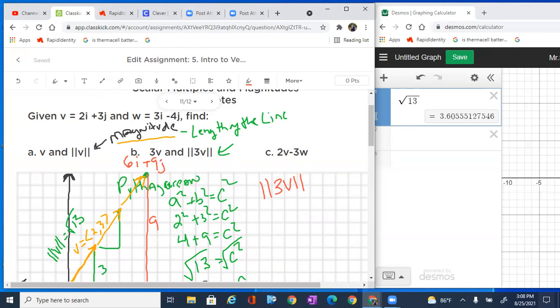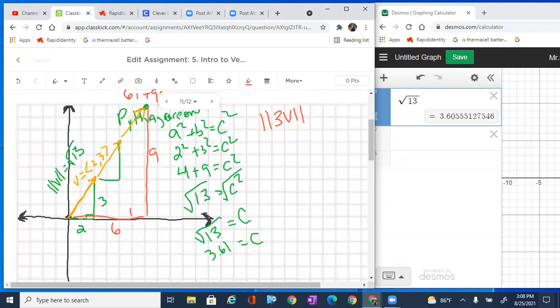But now let's find the magnitude. And the magnitude just goes back to what we were just doing. Finding the length of 3v, which is here in red right there. So what is 3v? We just say, well, 6 squared plus 9 squared equals c squared.